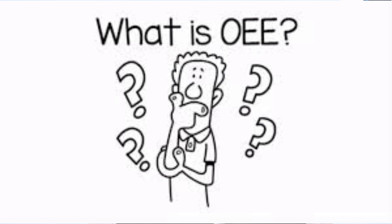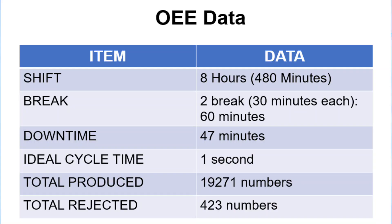Let's take a simple example to calculate OEE. We assume a shift of 8 hours (480 minutes), an overall break of 60 minutes, a downtime of 47 minutes, an ideal cycle time for producing one piece of 1 second, total pieces produced of 19,271, and total rejected pieces of 423. This is the base data we'll use to calculate Availability, Performance, and Quality.